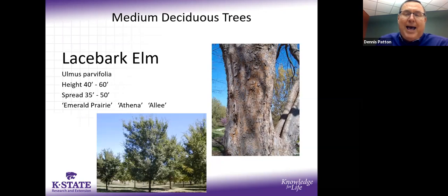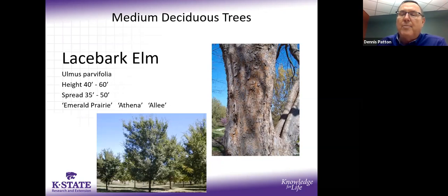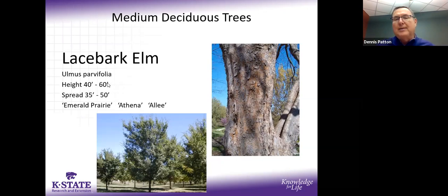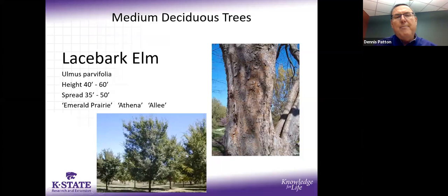Lace bark elm — I still have it on my list, but it breaks up pretty badly under wind and snow. We had a recent snowstorm and it broke up significantly. People like it for its exfoliating bark texture, but I'm moving it down on my list because it tends to break up more and more.